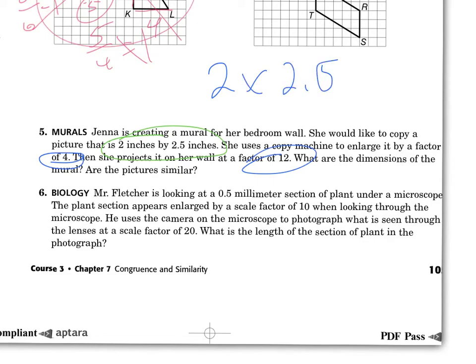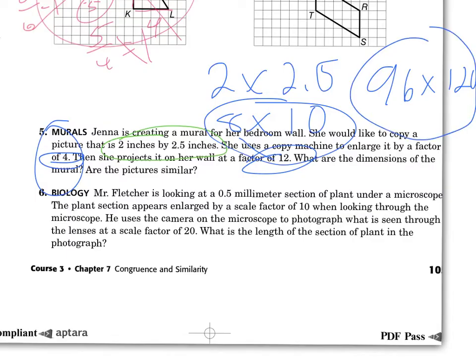So what are you going to do? All you're doing is two dilations. 2 by 2.5 is the size of the picture. What are you going to do first? You're going to multiply it by 4. So 2 times 4 is 8. 2 and a half times 4 is 10. Now it's an 8 by 10 picture. Then she's going to project it on her wall at a scale factor of 12. So what do you do with these numbers? You multiply them by 12. 8 times 12 is 96. And 10 times 12 is 120. It says what are the dimensions of the mural? Here are the dimensions of the mural right here. It's a 96 by 120 inch mural. Now it says are the pictures similar? Absolutely. Those are definitely similar because you used the dilation to make them bigger. And the same scale factor all the time. Always multiplying. Always having that same ratio.